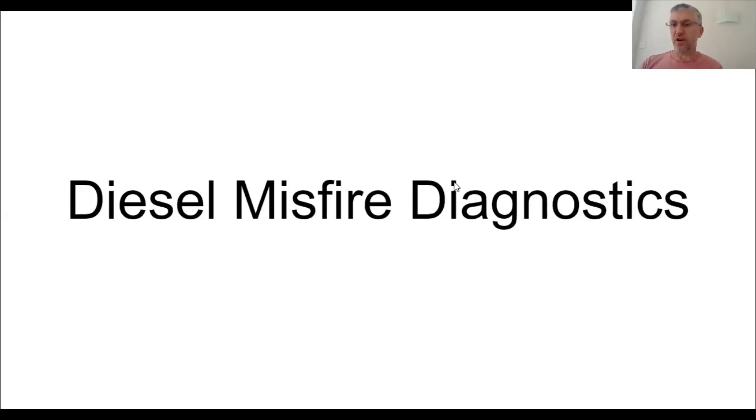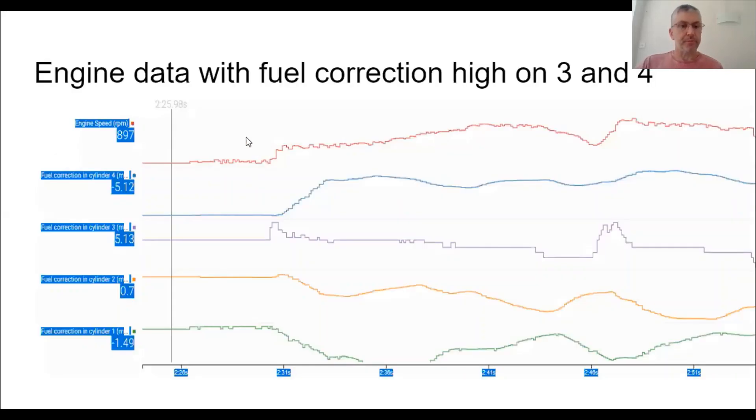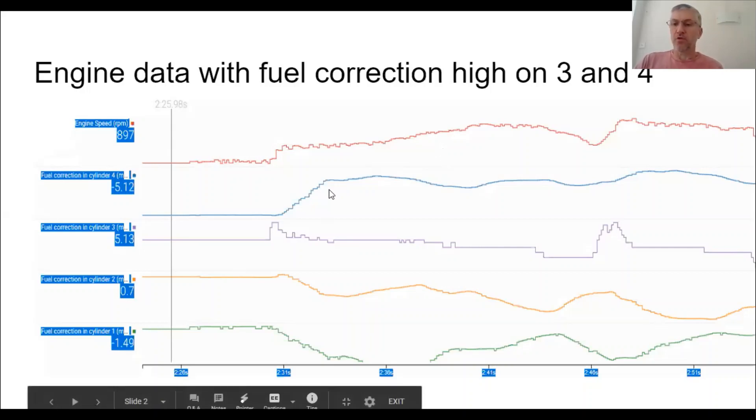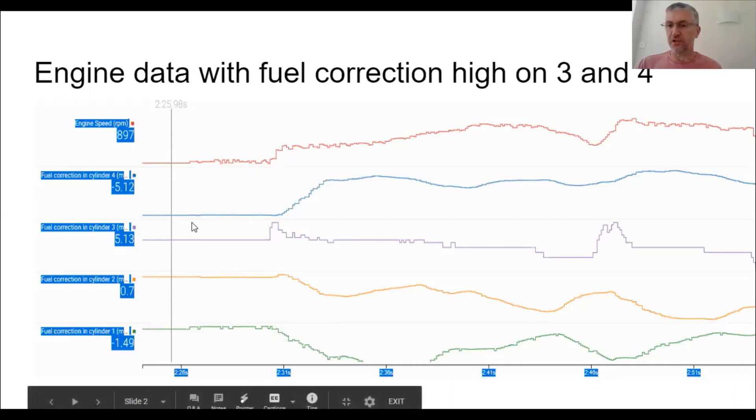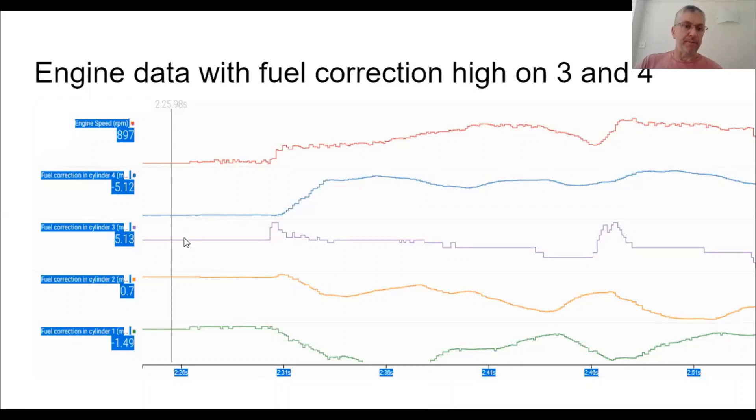So I've added this to a graph just so we can run through it and see what we think. So you can see on my graph here, at the start of my graph, I'm just at idle speed and you can see cylinder 4 has a correction of minus 5, cylinder 3 has a correction of plus 5, cylinder 2 at 0.7 and cylinder 1 at 1.49. My golden rule here is I want all my corrections to be under 2. If they're above 2, then there's a concern with the cylinder. And also they should all cancel out each other. So if you add them all up, it should come to pretty much zero. So you can clearly see I've got a concern here that is pointing to a concern with cylinder 3 and cylinder 4.